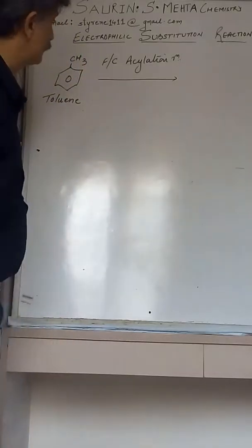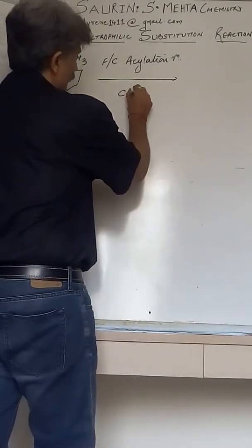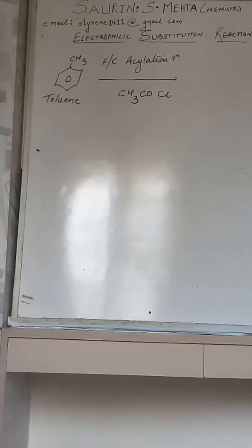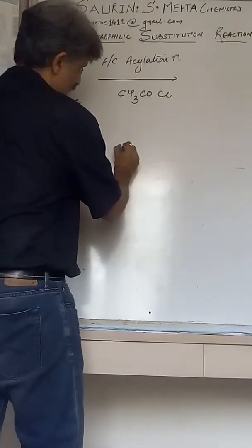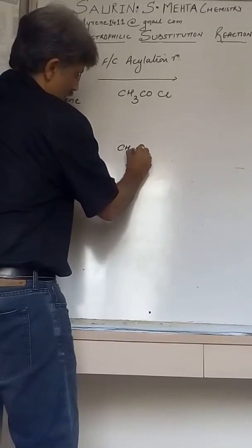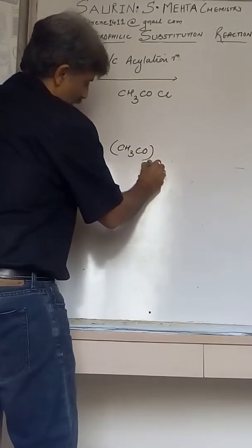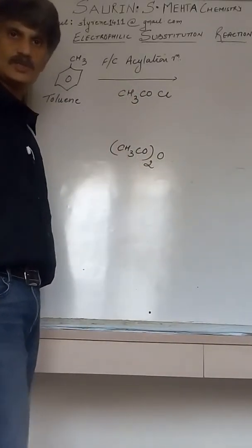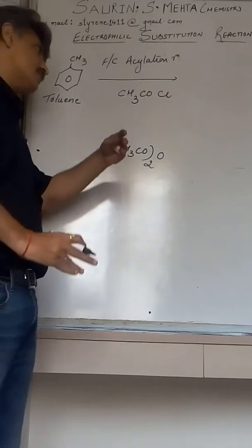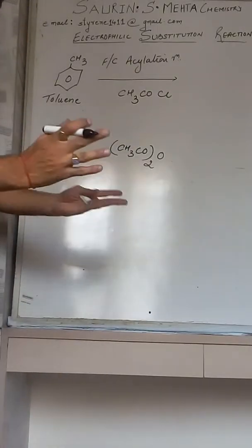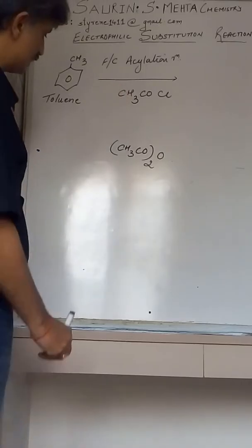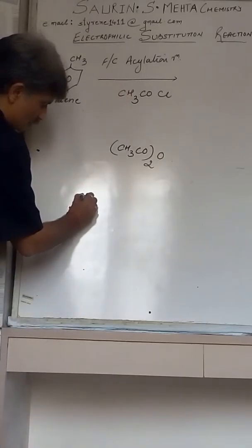One was CH3COCl and another was CH3CO2O. We did reactions for both the reagents showing their byproducts. Same thing we will do over here, so you have a sort of revision. This is CH3COCl. I will show you the constitution of CH3COCl.